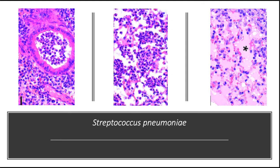The spleen contains the largest collection of phagocytes in the body and is the major organ responsible for removing pneumococci from the blood. It is also an important site for production of antibodies against polysaccharides, which are the dominant protective antibodies against encapsulated bacteria. The presence of numerous neutrophils in sputum containing gram-positive lancet-shaped diplococci supports the diagnosis, but S. pneumoniae is part of the endogenous flora in 20% of adults, so false positives may occur. Pneumococcal vaccines containing capsular polysaccharides from common serotypes are used in high-risk individuals.